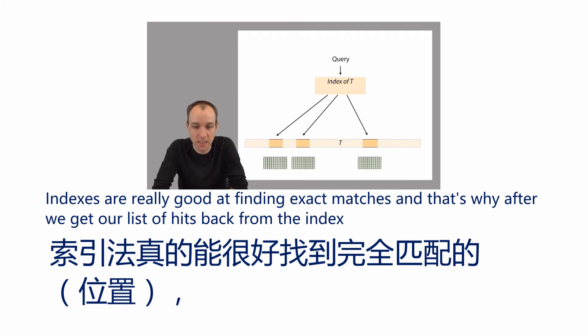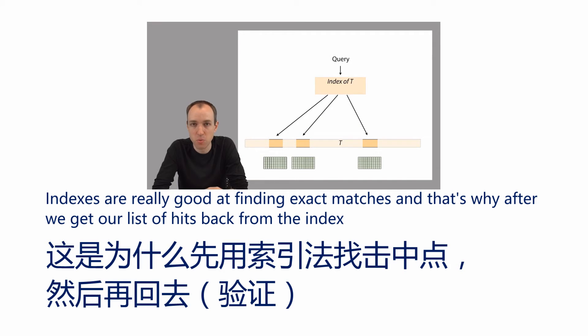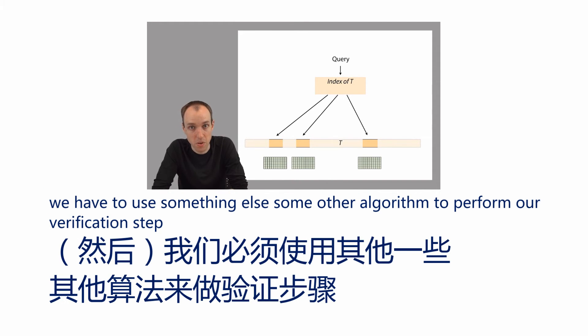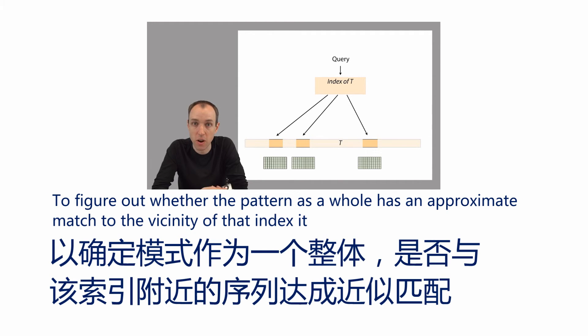Indexes are really good at finding exact matches, and that's why after we get our list of hits back from the index, we have to use some other algorithm to perform our verification step to figure out whether the pattern as a whole has an approximate match to the vicinity of that index hit.